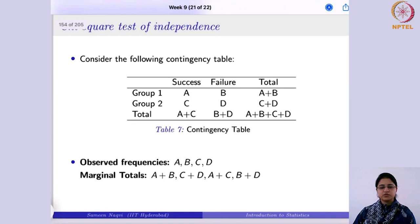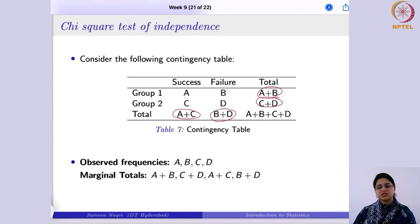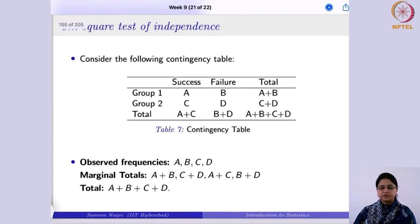The marginal totals are A plus C, B plus D, A plus B, and C plus D. The grand total is obtained by adding up all the observed frequencies.